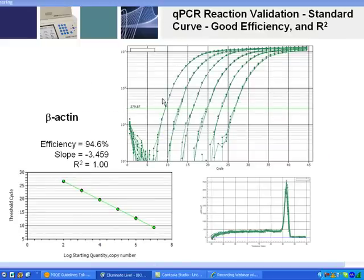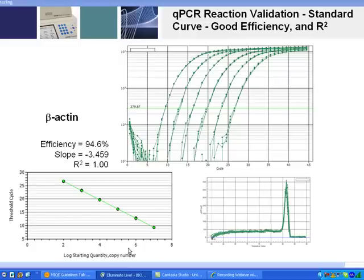Once we've done the standard curve for each of the primer pairs, this standard curve is converted — the raw data in the standard curve, so the dilution series — is converted to an actual linear standard curve where we plot the threshold cycle versus the log of the starting quantity, and you'll get a slope, and the slope is directly related to the efficiency of your qPCR reaction.